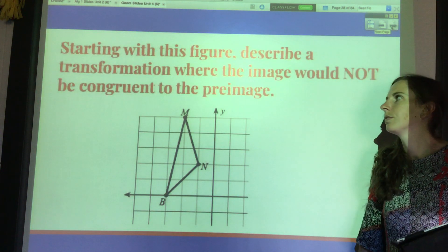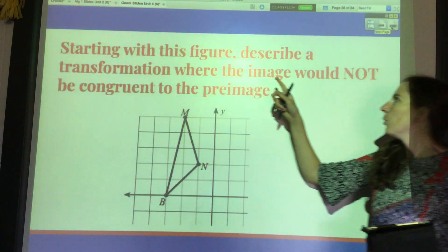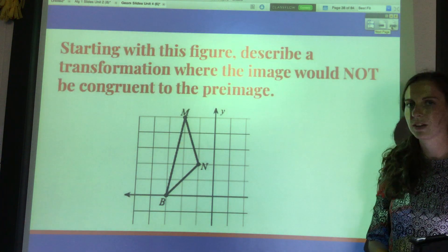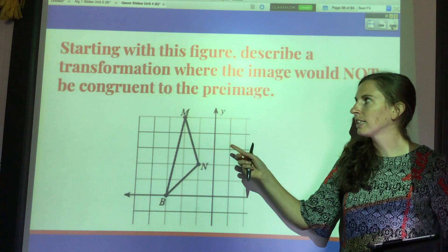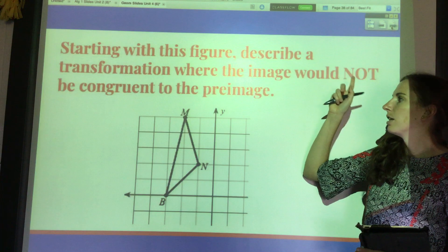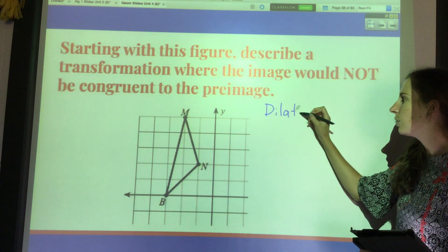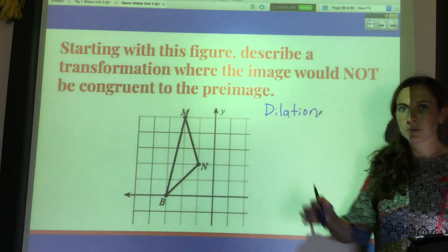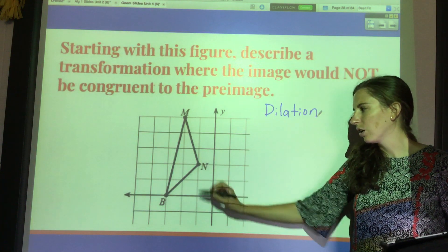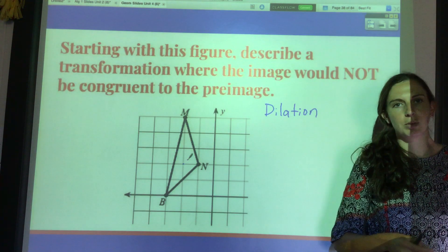For example, if I start with this figure, describe a transformation where the image would not be congruent to the pre-image. If I translate, rotate, or reflect, it is going to be congruent. So the only sort of transformation where it would not be congruent would be a dilation. It can be any sort of dilation — a dilation of two, one-third, a dilation about the origin, or about any point.